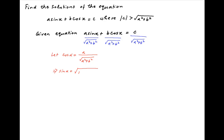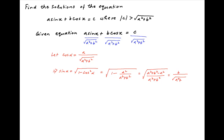Therefore sin(α), which equals √(1 − cos²α), equals √(1 − a²/(a² + b²)), which simplifies to b upon √(a² + b²). Substituting these results in the above equation, we get sin(x)·cos(α) + cos(x)·sin(α).